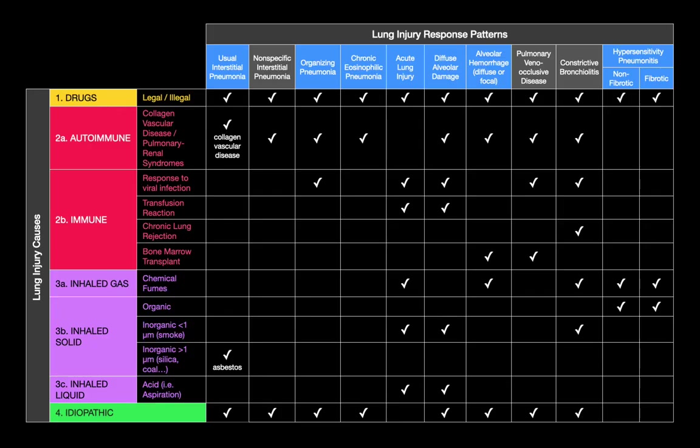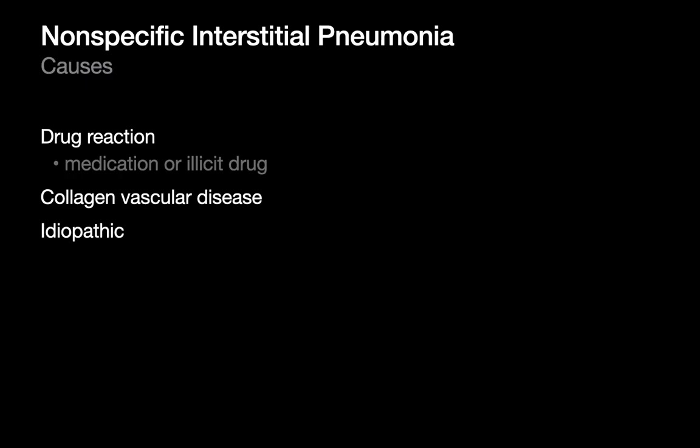Non-specific interstitial pneumonia — NSIP — is also on our list of four things to consider in the differential of reticular interstitial pattern. Causes include drug exposures (medication or illicit), collagen vascular disease, and idiopathic cases. In some people, the drug exposure or collagen vascular disease irritates the lung and the response isn't UIP but NSIP.